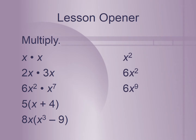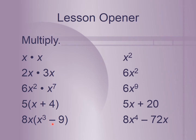For this next problem, we want to distribute that 5. So we multiply 5 by x and also 5 by 4. So 5 times x is 5x, and 5 times 4 is 20. For the last problem, we distribute 8x by both terms: 8x times x cubed is 8x to the fourth, and 8x times negative 9 becomes negative 72x, written as minus 72x.